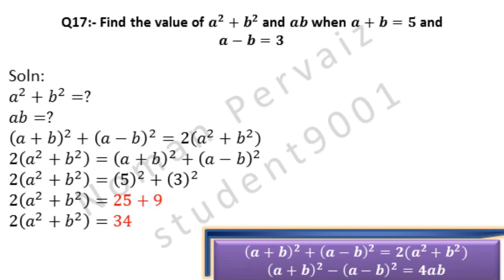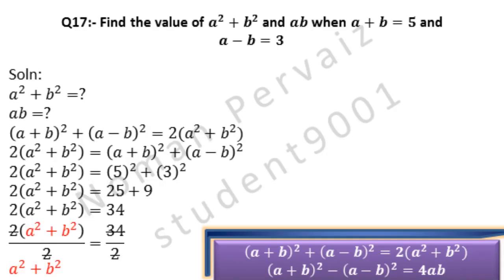Next we remove 2 by dividing both sides by 2, since we need only a² + b². As 2 is cancelled, we write a² + b² = 34 ÷ 2, which becomes 17. So a² + b² = 17 is our first answer.